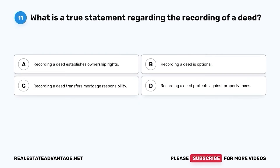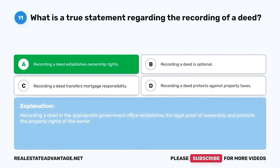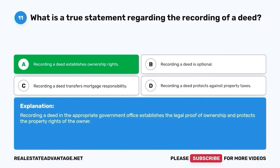Question 11. What is a true statement regarding the recording of a deed? A. Recording a deed establishes ownership rights. B. Recording a deed is optional. C. Recording a deed transfers mortgage responsibility. D. Recording a deed protects against property taxes. The correct answer is A. Recording a deed establishes ownership rights. Recording a deed in the appropriate government office establishes the legal proof of ownership and protects the property rights of the owner.